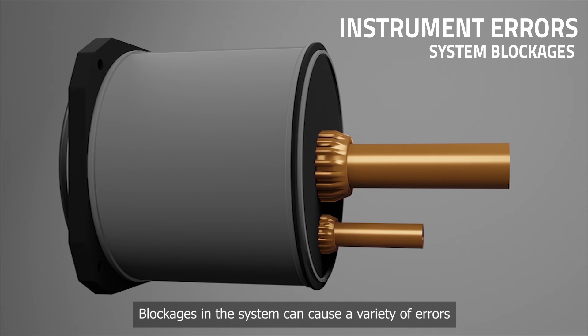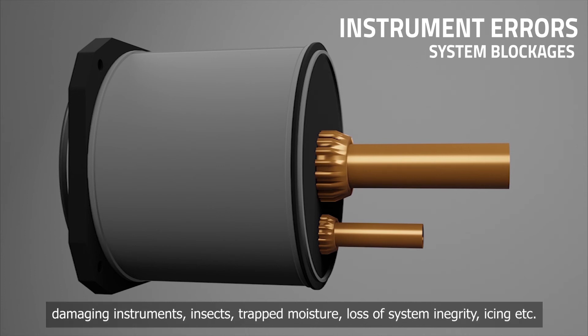Blockages in the system can cause a variety of errors. To prevent these errors, you must complete a thorough preflight. Blockages can occur from FOD, striking an object, damaging instruments, insects, trapped moisture, loss of system integrity, icing, etc.